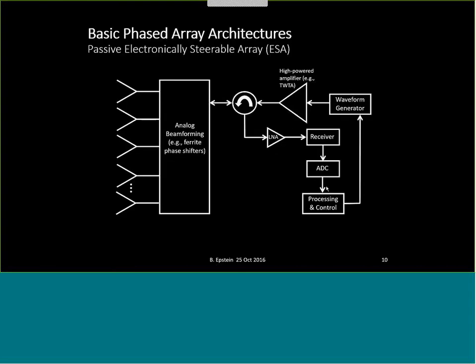A basic array is a collection of transmit or receive elements. Traditionally, each would have its own ferrite phase shifter, then the incoming signals would be combined, sent through an LNA and a receiver. On the transmit side, the signal is broken up, sent through phase shifters, and out to the elements — a spotlight architecture that can be replicated across the array with multiple platforms.